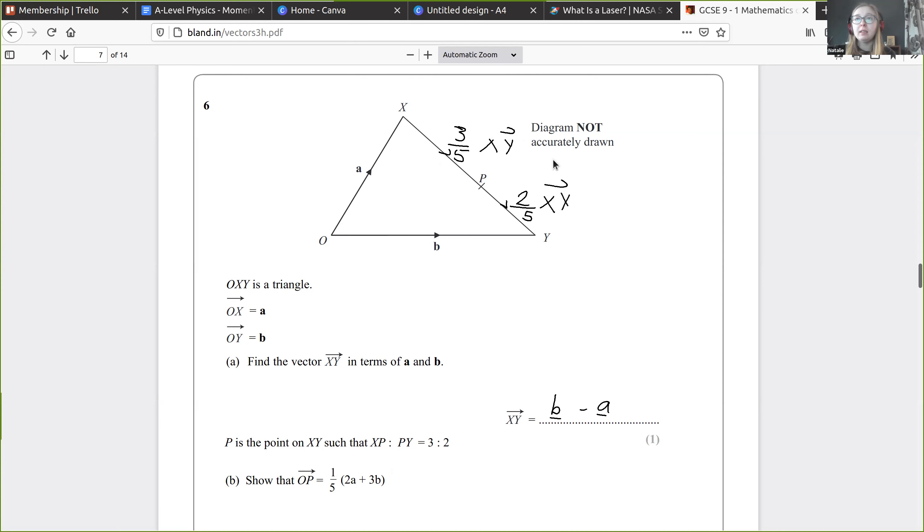So if I was going to go O to P, I could go O to X, X to P. So OP is equal to OX plus XP. OX is A plus XP is three fifths of XY. So three fifths of B minus A. OP is then therefore equal to A plus three fifths B minus three fifths A, which is going to give me two fifths A plus three fifths B, which is going to give me a fifth of 2A plus 3B. Done.